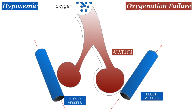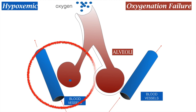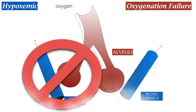Normally, oxygen is inhaled, goes to the alveoli, and diffuses within the pulmonary blood vessels. But in hypoxemic respiratory failure, this process is simply compromised.